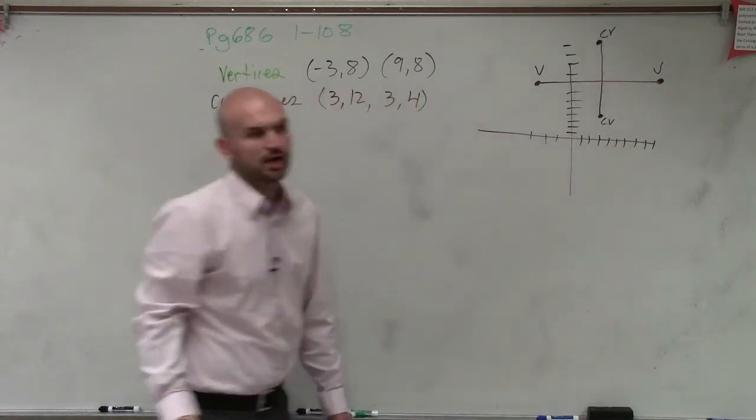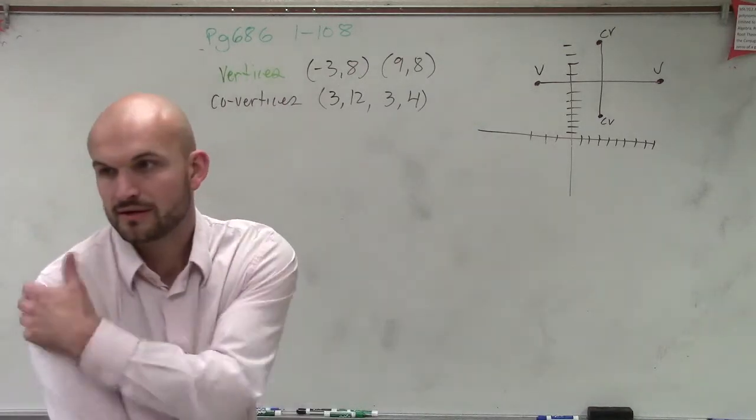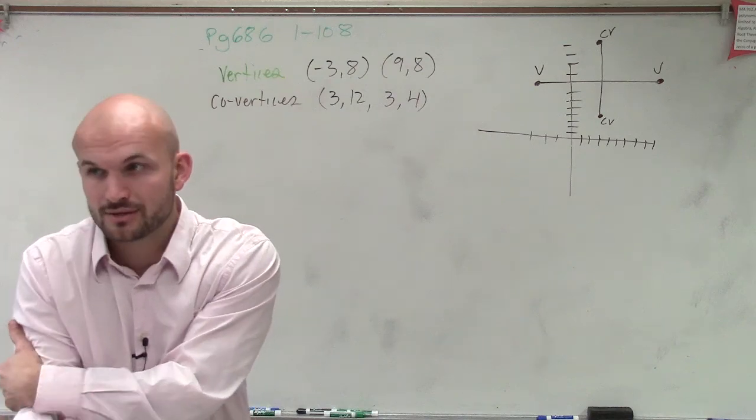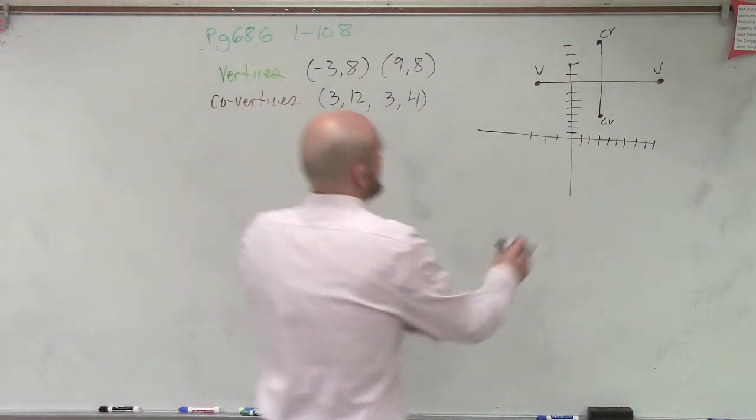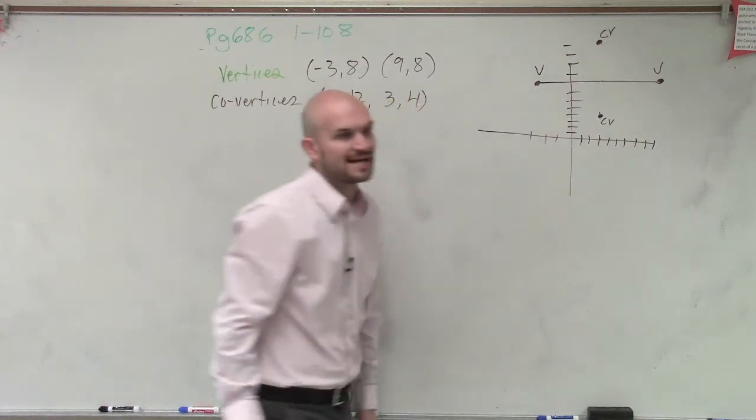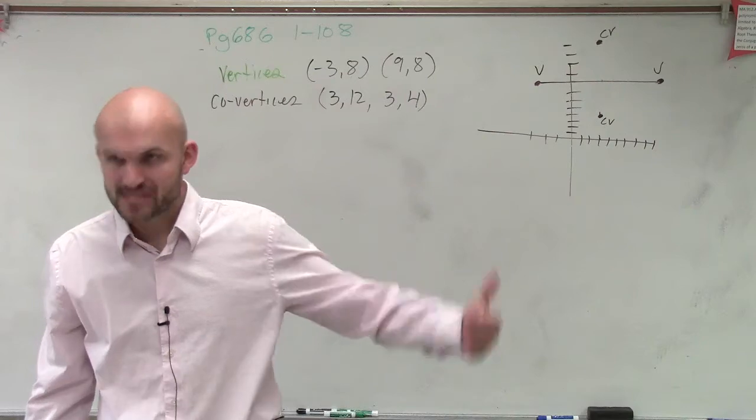So which one is longer, the distance from vertice to vertice or co-vertice to co-vertice? Vertice to vertice. Remember, the vertice to vertice is what we call your major axis. And so if we know our major axis, what else lies on our major axis? Our foci and our center, right?